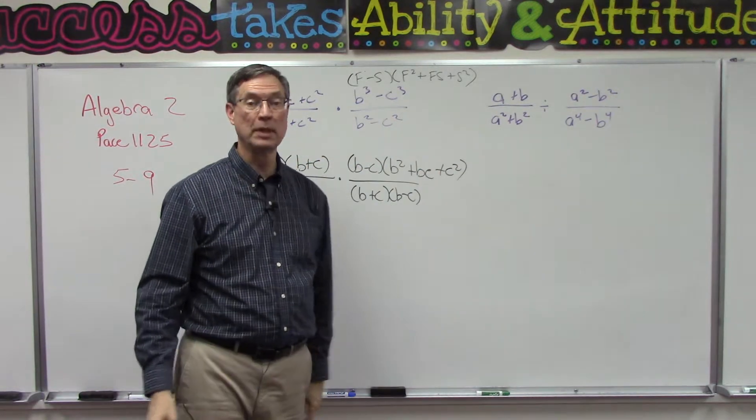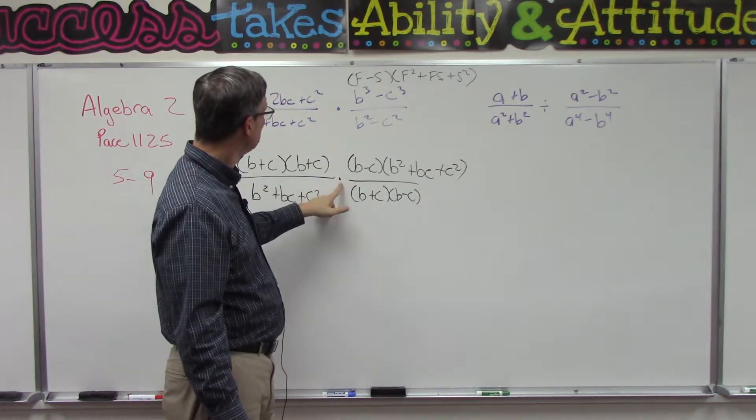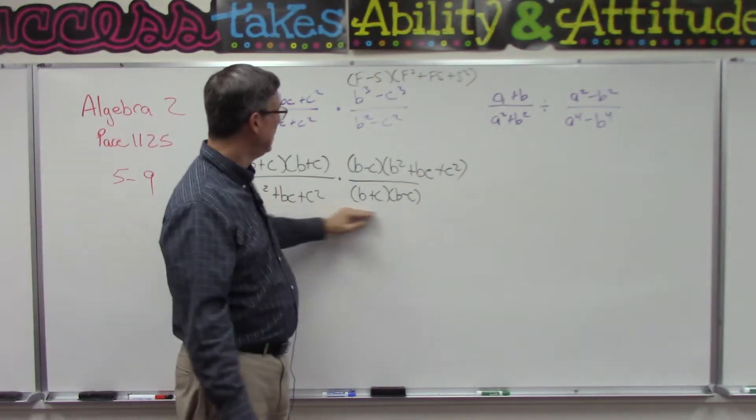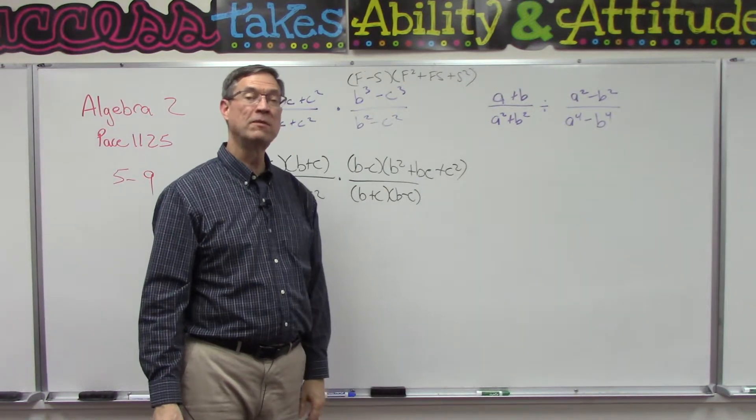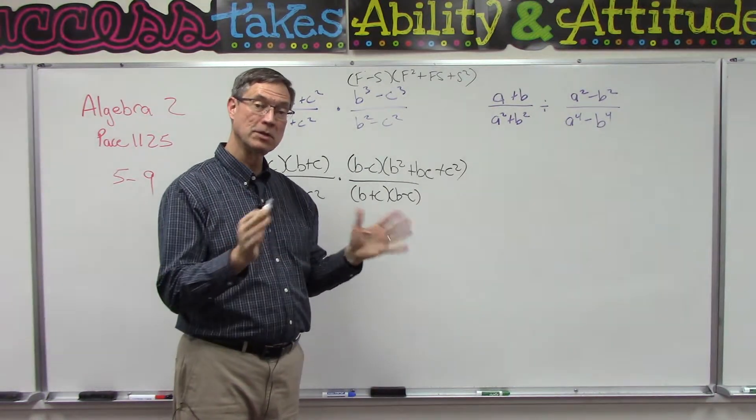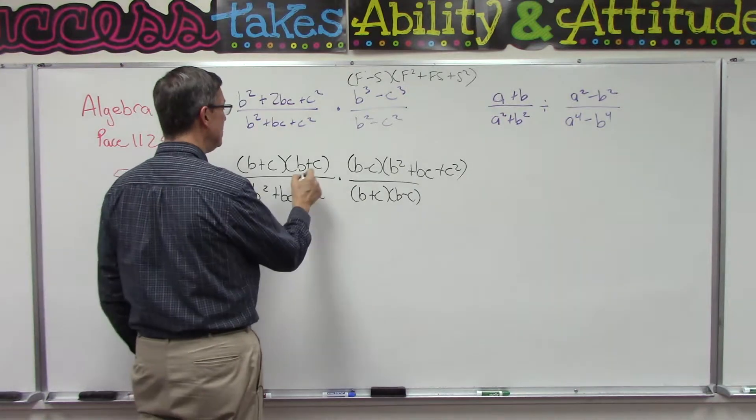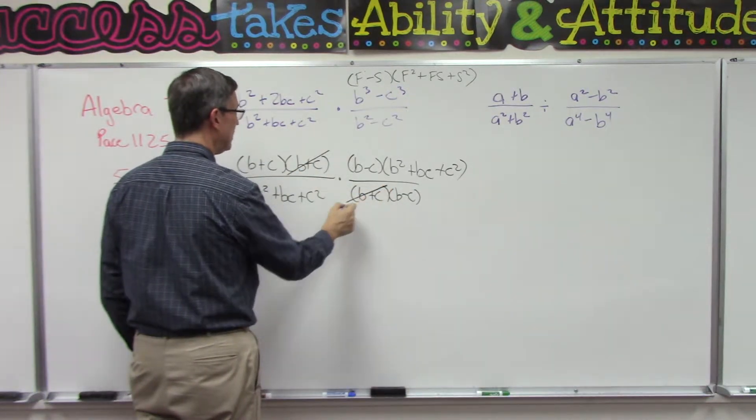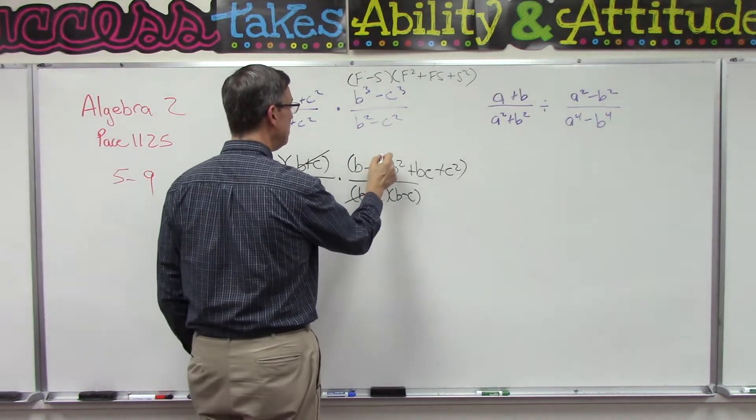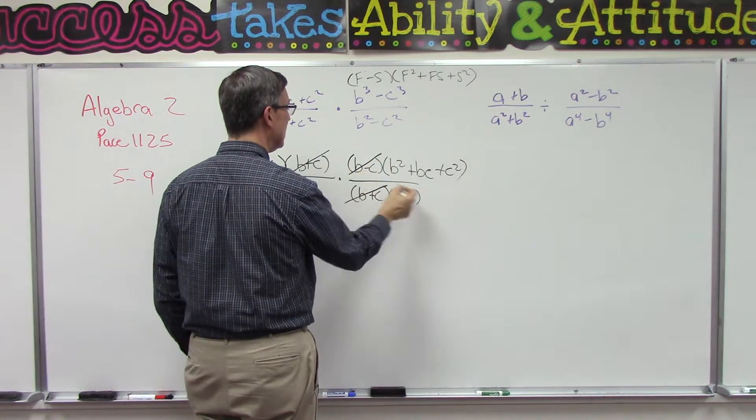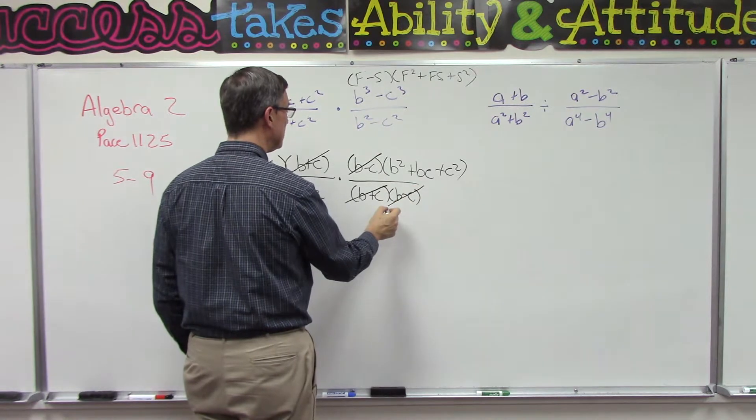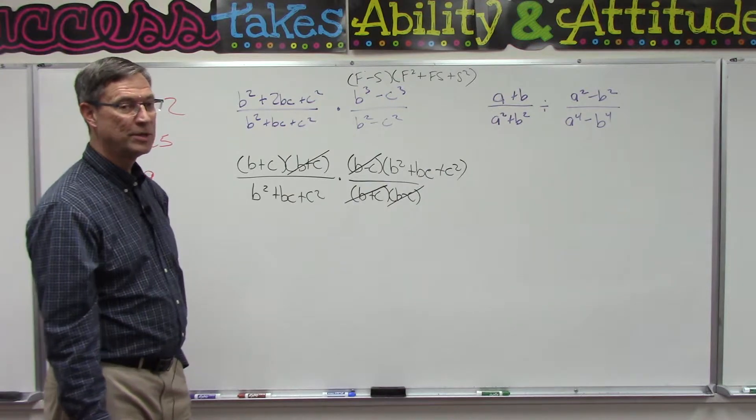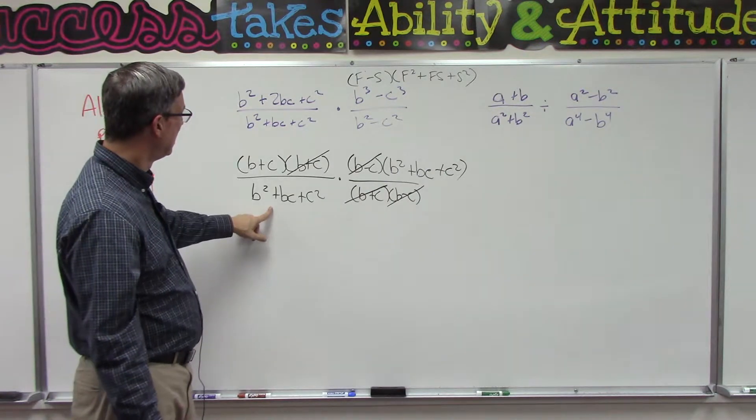Now this is being multiplied, so we can just compare anything across the top with anything down here on the bottom and find factors that we can cancel out from top to bottom. Oh, here's an easy one right off the bat: (b + c) is going to cancel (b + c), yay! (b - c) is going to cancel (b - c).